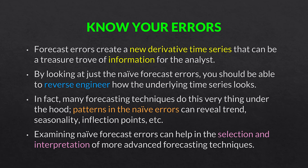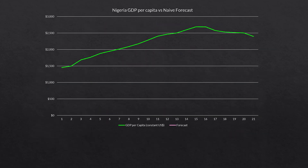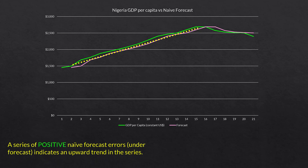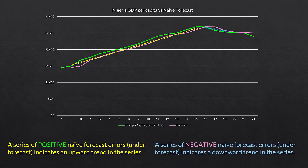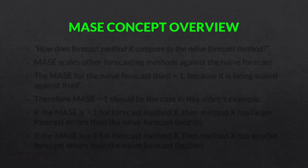Examining naive forecast errors can help in the selection and interpretation of more advanced forecasting techniques. In MASE, the naive forecast itself takes a central role. Here is a graph of the actual GDP per capita in the green line and the forecast value in the pink line. A series of positive naive forecast errors indicates an upward trend because the naive forecast cannot keep up. A series of negative errors indicates a downward trend, again because the naive forecast cannot keep up with the descent.